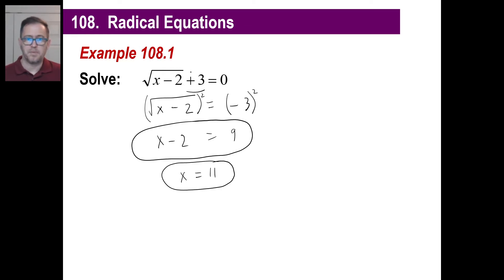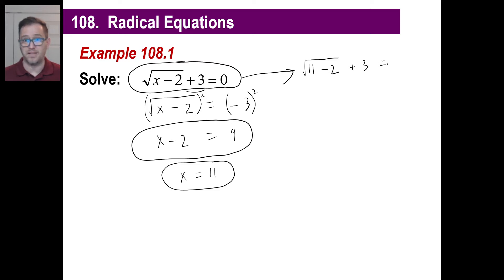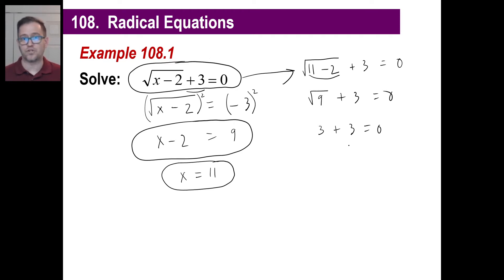The weird thing is, because we moved this over, turned it into a negative, and then squared it — which turns it into a positive — every single one of these radical equations requires you to check the answer. So put 11 back into the original equation. The square root of 11 minus 2, plus 3, should equal 0. 11 minus 2 is 9, the square root of 9 is 3, and 3 plus 3 does not equal 0. So there is no solution.